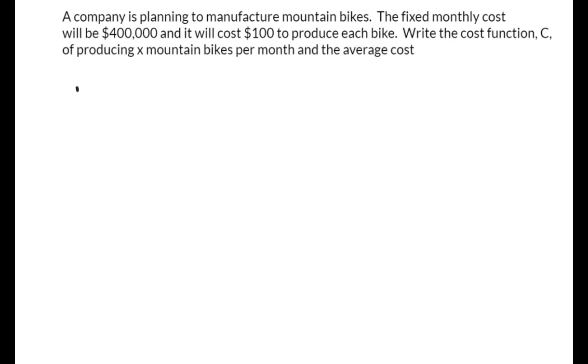So to set up your cost function would be C of x equals $100 per bike times x plus, no matter what, they have to pay the $400,000.